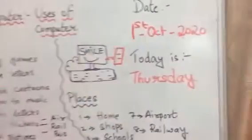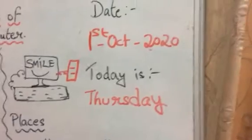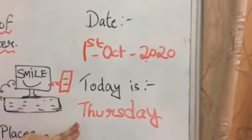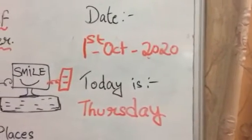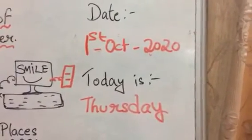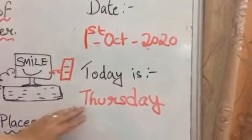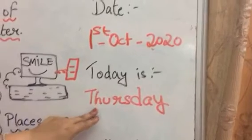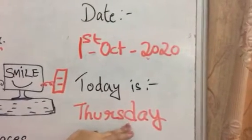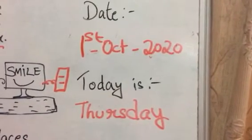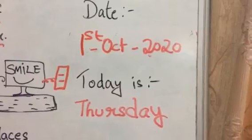Today is 1st October 2020. Today is Thursday. What day is it? Speak with me — Thursday. Okay, very good.